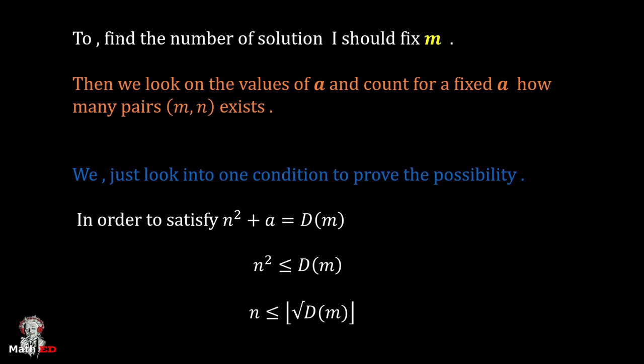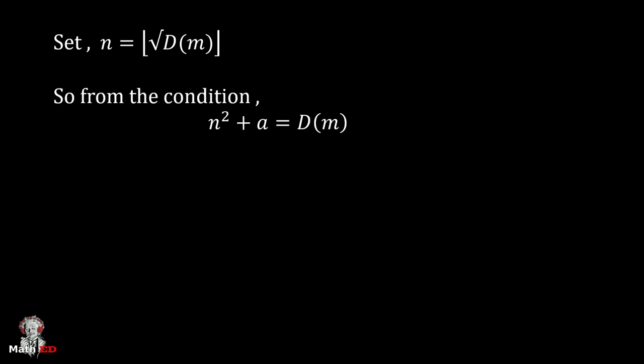Now we should look into the extreme condition when n = floor(√D(m)). So from the condition n² + a = D(m), we can say that D(m) is greater than D(m) + 1 + a - 2√D(m).